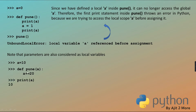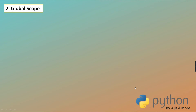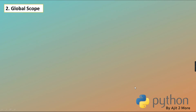Before the pune call, I am printing 'a', then calling pune, then printing 'a' again. When I print the global 'a', it is still 10. I hope this is clear to all of you - let me get confirmation so we can move ahead.